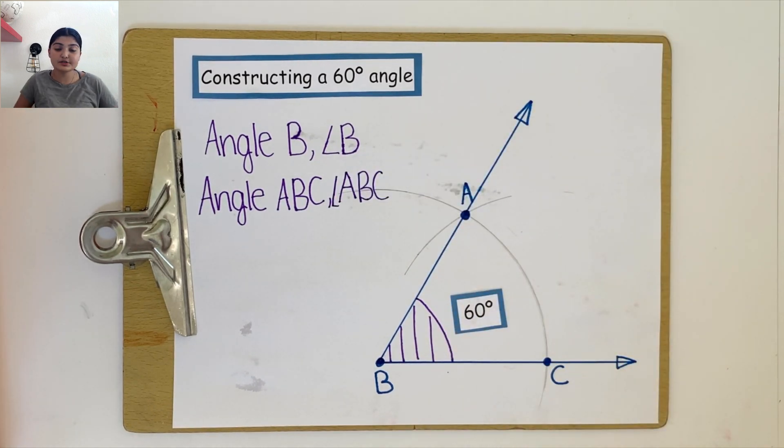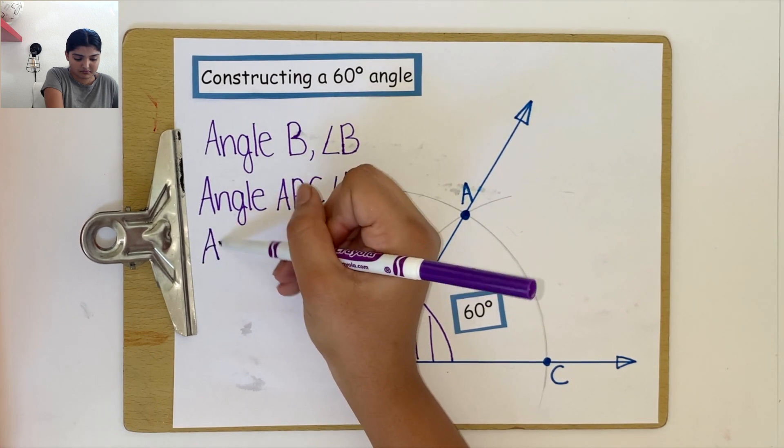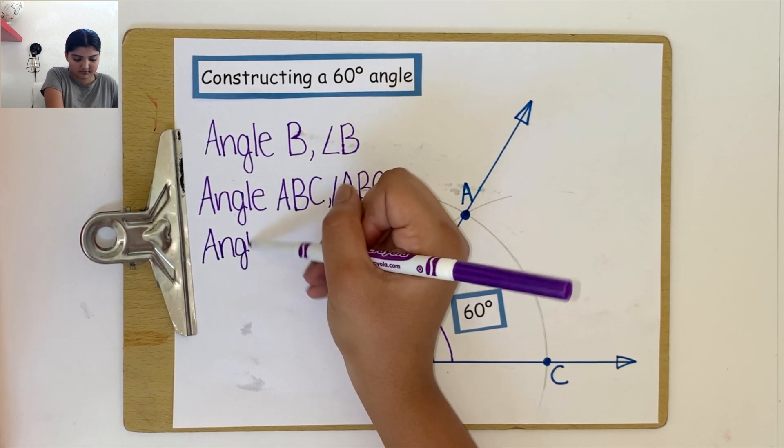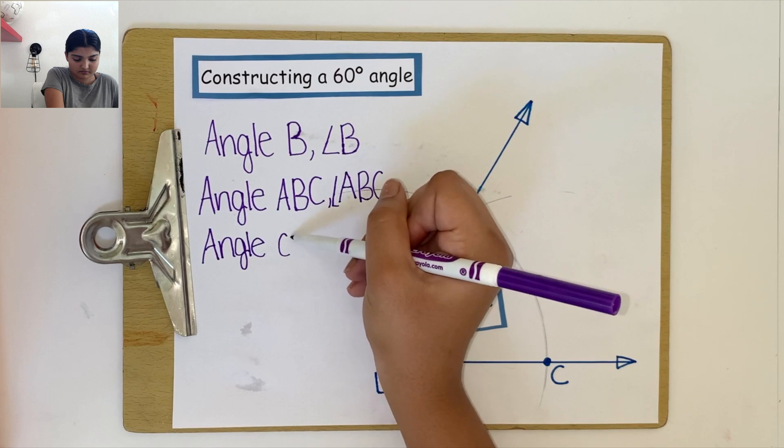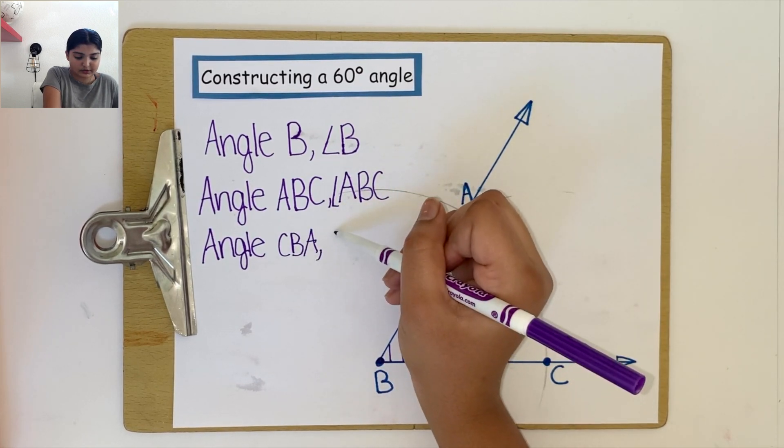Finally, we can also write it as angle C, B, A or by using the angle symbol.